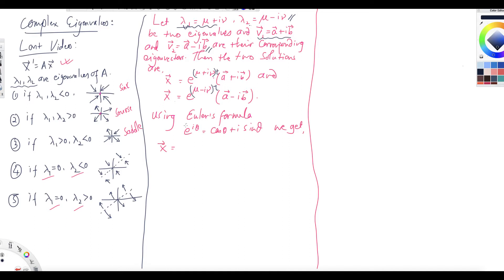We use Euler's formula: e^(iθ) = cos θ + i sin θ. Applying this, we write e^(mu·t) · e^(i·nu·t) · (a + ib). Using Euler's formula on the e^(i·nu·t) term, we get e^(mu·t)(cos(νt) + i sin(νt))(a + ib).